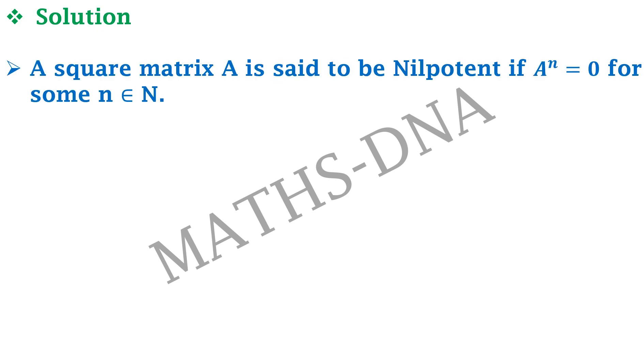A square matrix A is said to be nilpotent if A raised to n equals to 0 for some n belongs to N. Which simply means that if you are taking the power of a given matrix A and you get a 0 matrix, then that matrix A is said to be a nilpotent matrix. And the number n is called the index of the nilpotent matrix.